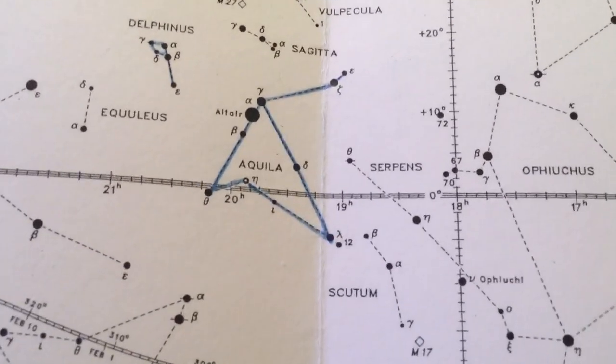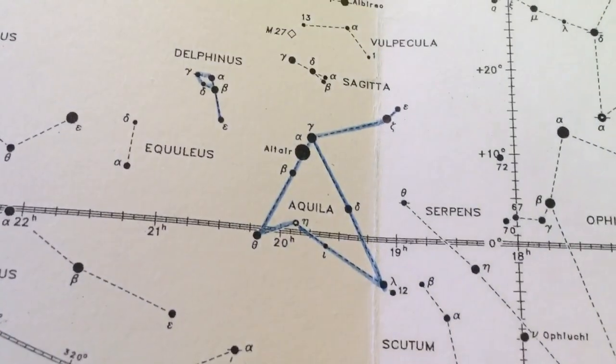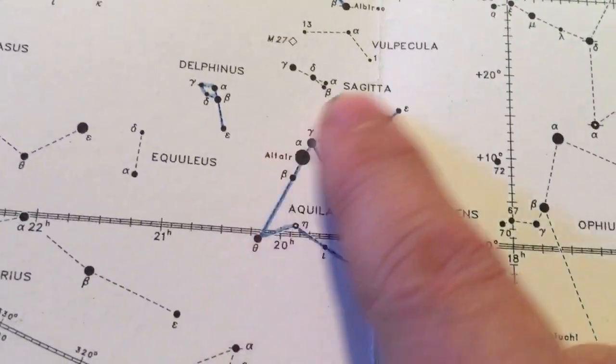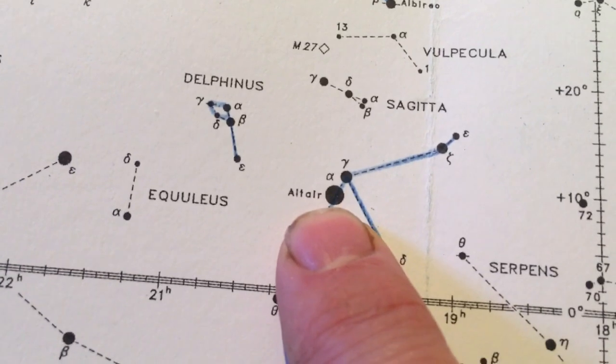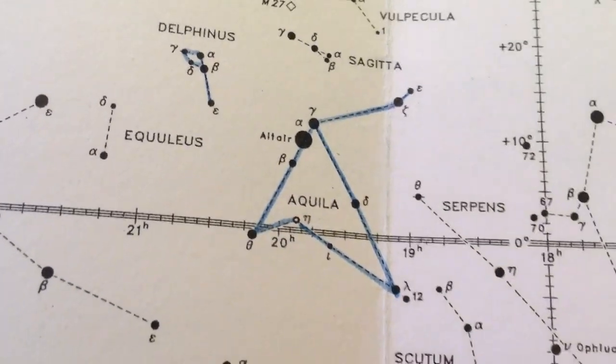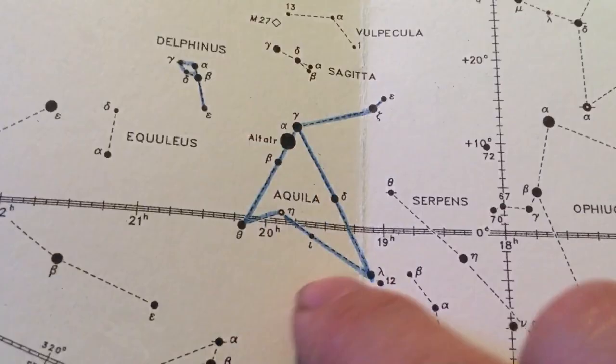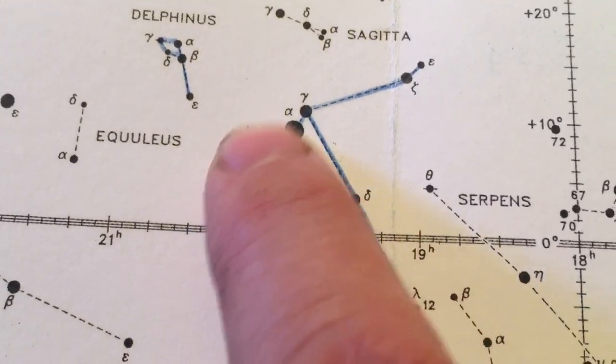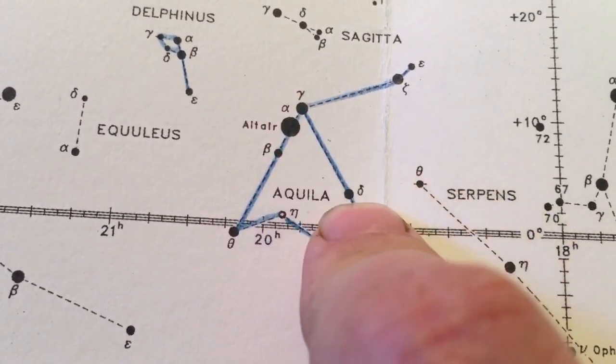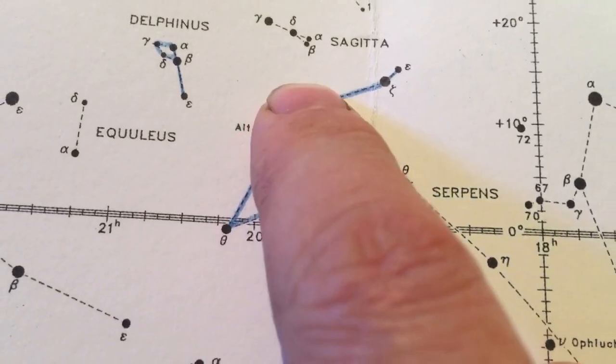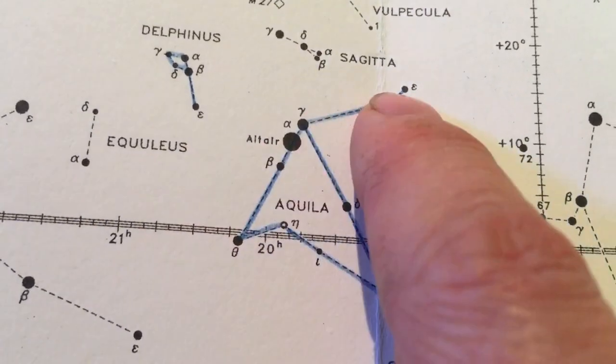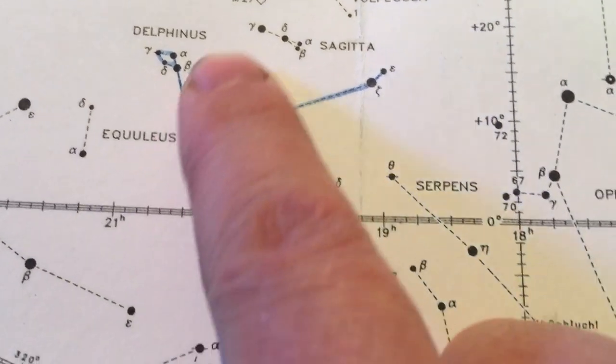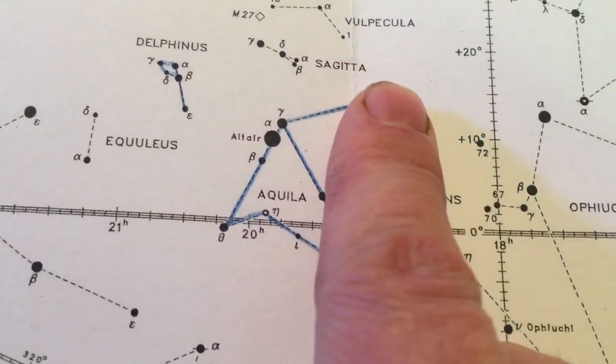Then south of that, we have our second bird. This is Aquila the Eagle with its bright star, Altair, in its tail feathers. Personally, I don't like how the star chart shows Aquila. I think of it a little differently. I think of this smaller triangle shape as the eagle's body. There's an eagle wing, there's an eagle wing, then out here is the head. Either way, this is Aquila the Eagle.